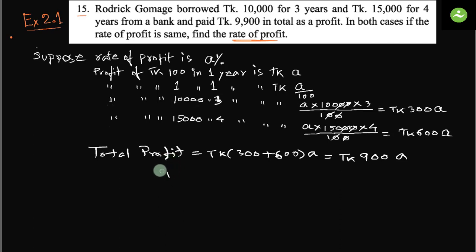So we can write taka 900a equals to taka 9,900. So if we divide both sides by taka 900...